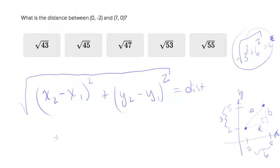But so let's take x2, which is seven, minus x1, which is zero, plus y2, which is zero, and y1, which is negative two. Square that. Take the square root of all this,